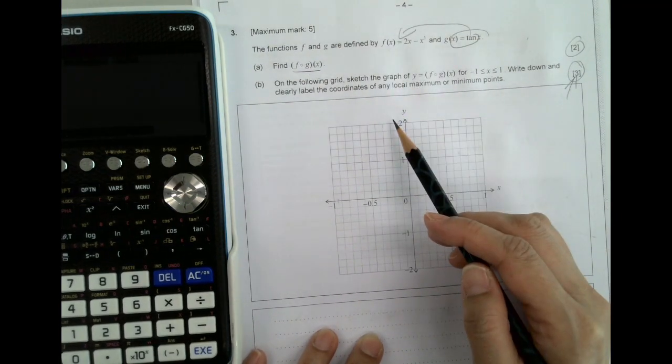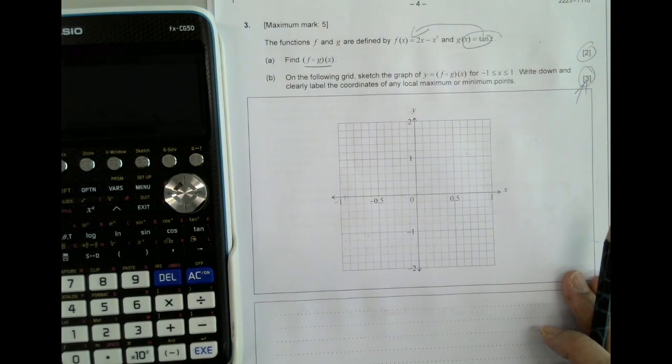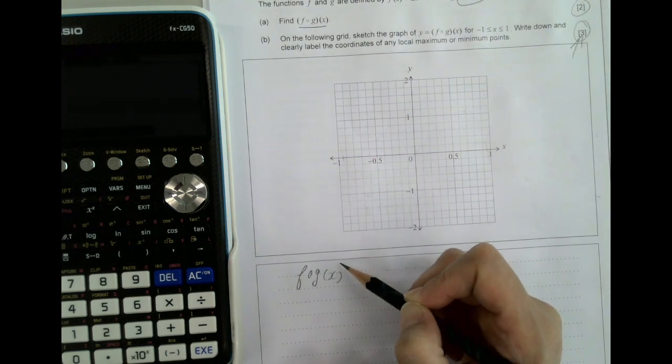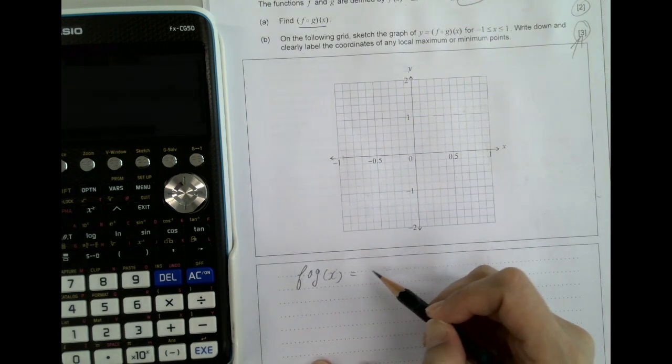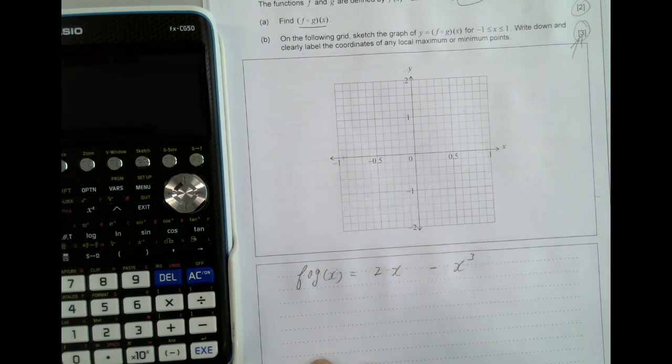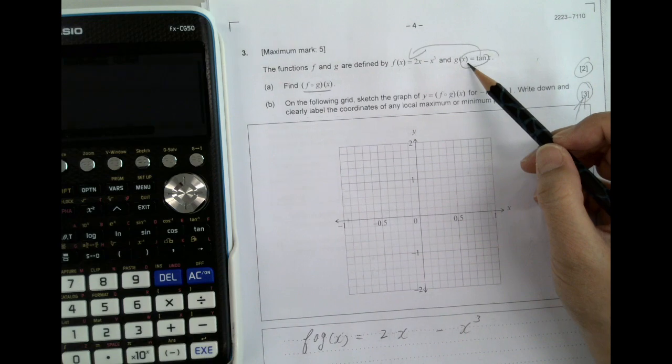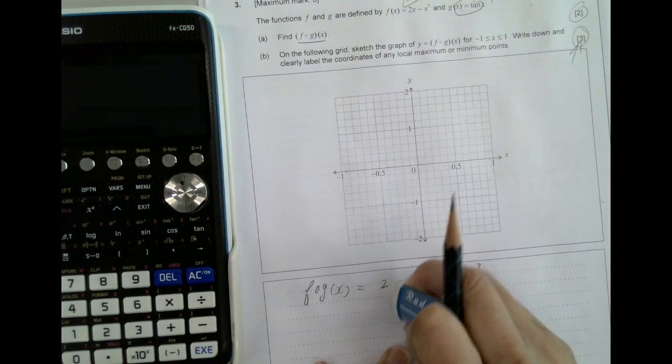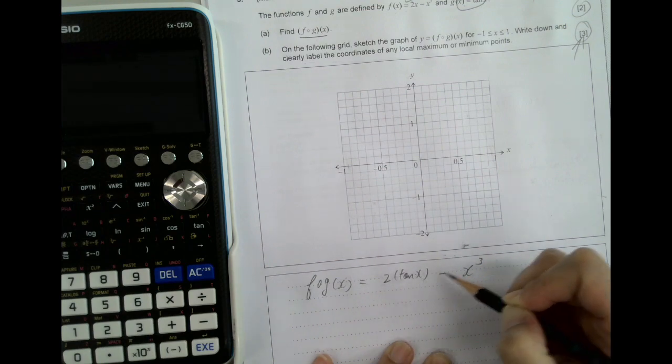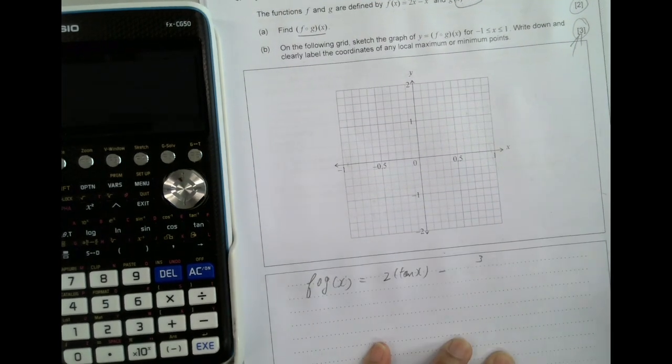I need to move slowly. So first of all, this is a composite function, which means that our tan put into f. Usually what I'm going to do with my student is that I write it down first, and then I will write down the original function f(x) = 2x - x³. Then we put the tan inside.